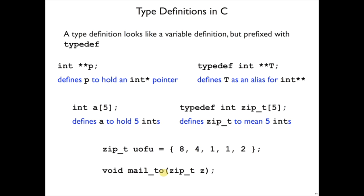And then I can write a function mail_to, which takes a zip_t as an argument, which is the same as taking an array of five elements as an argument, which, as a function argument of course, is the same as taking a pointer to integers.